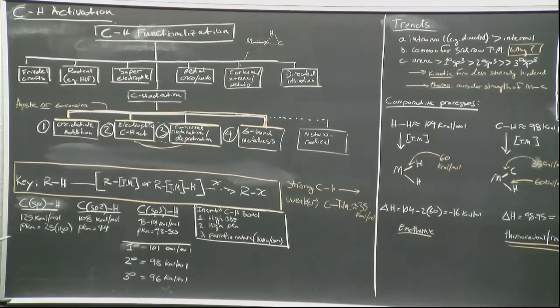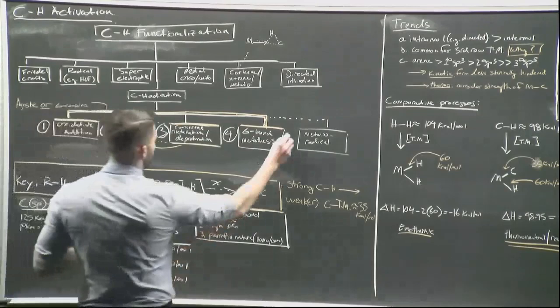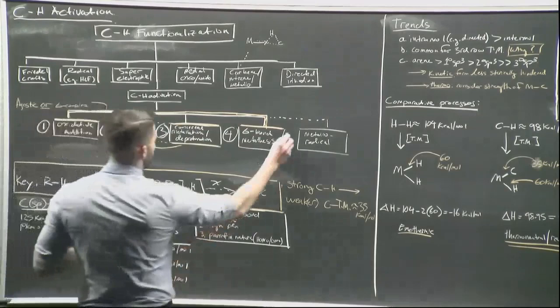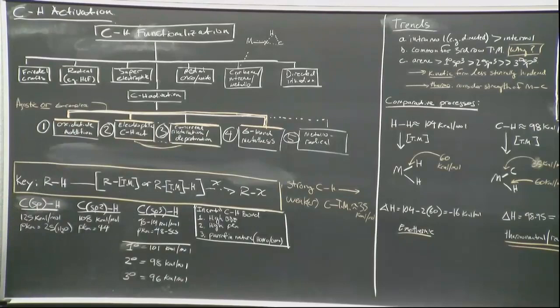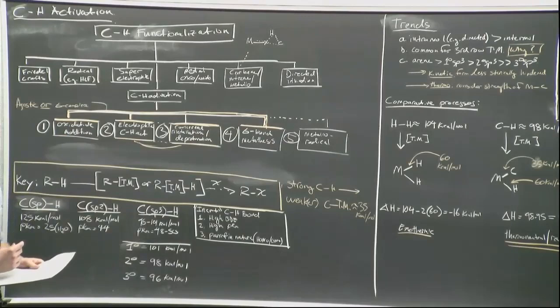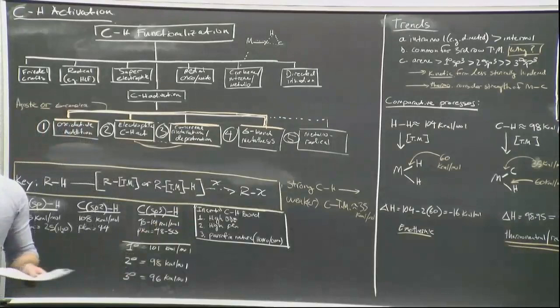There are five mechanistic regimes — probably more if you dig into exotic literature — and we're going to talk about four today: oxidative addition of transition metals into C–H bonds, electrophilic CH activation, concerted metallation–deprotonation (CMD), and sigma bond metathesis. The fifth, metalloradical chemistry, I can discuss afterwards, but for the sake of time we won't cover it today.